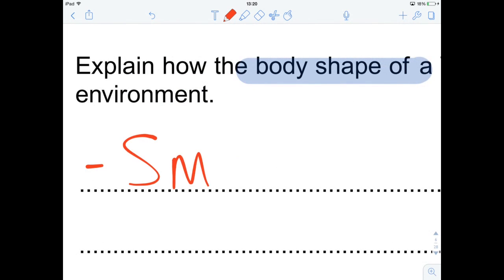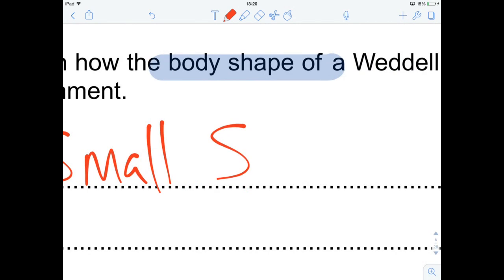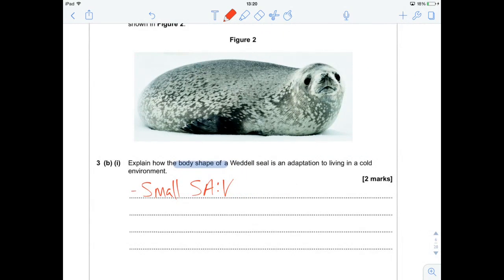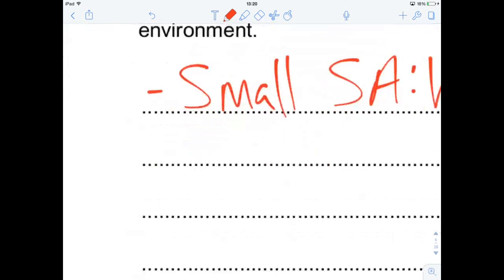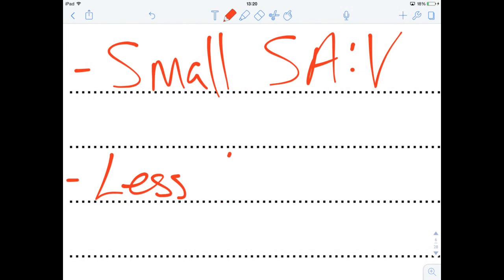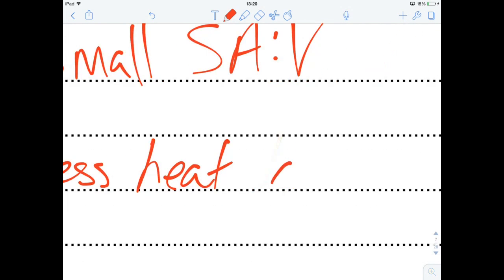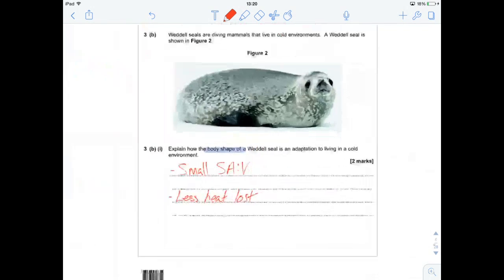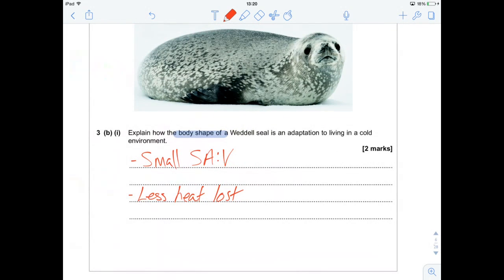Instead, we think about this guy as having a rather small surface area to volume ratio. So minimal surface area, lots of volume. And the advantage to that is there's going to be less loss of heat. So you can maintain a warmer internal temperature. So less heat loss to environment. Nice and straightforward. It's pretty much a GCSE question, so don't overthink these too much.